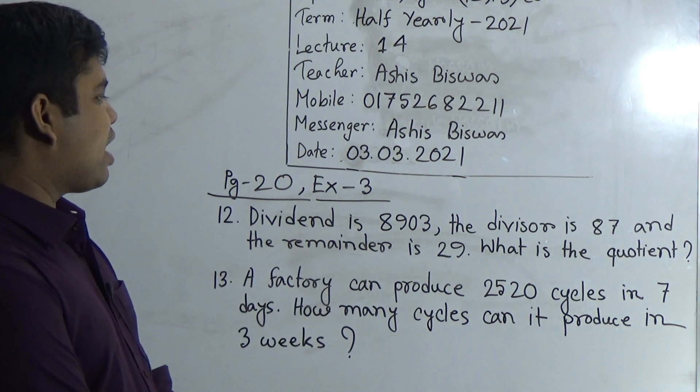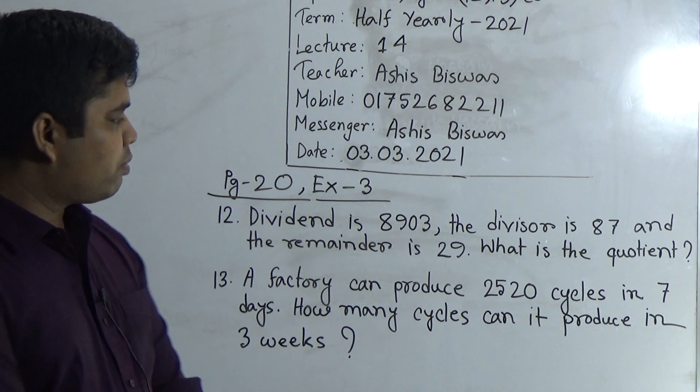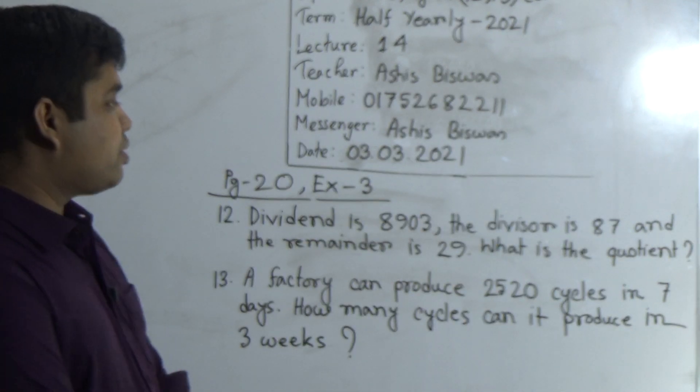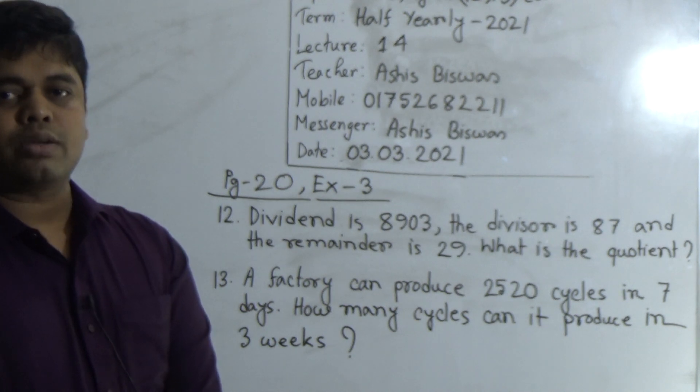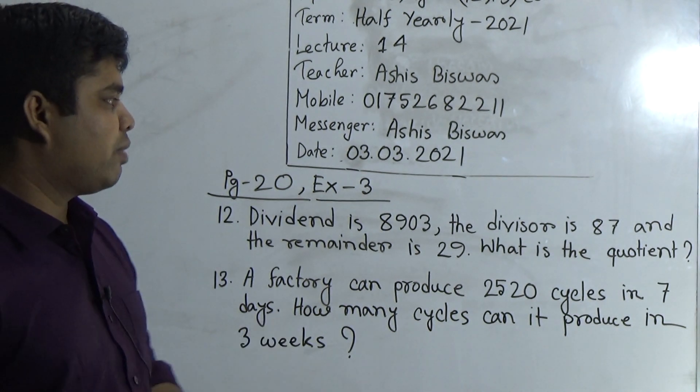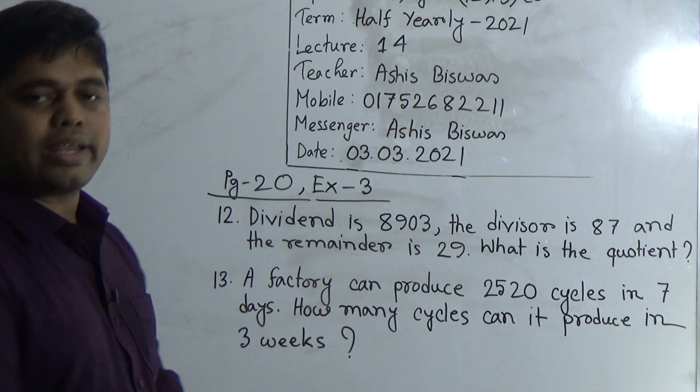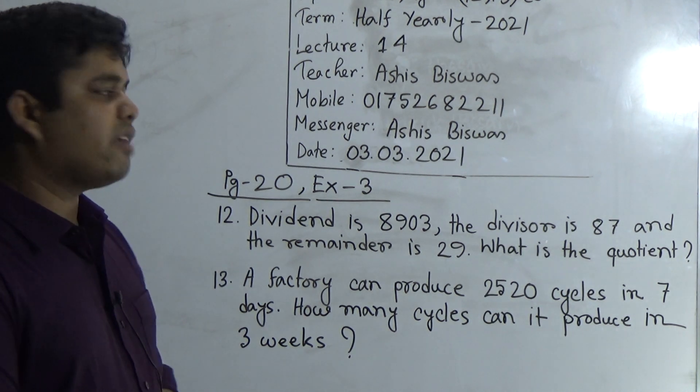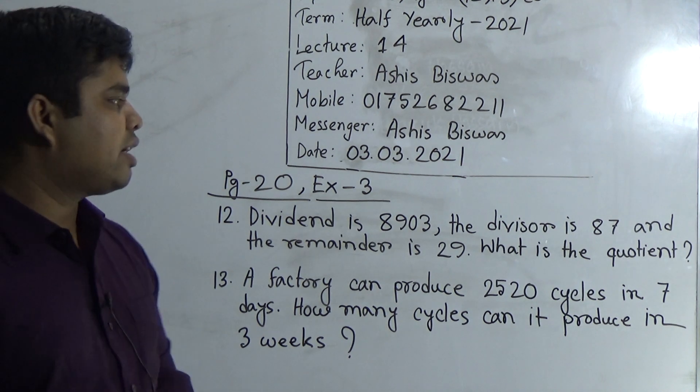My dear students, we have already learned the formula of dividend, divisor, quotient, and remainder. But today we need the formula of quotient. What is the formula of quotient? The formula of quotient is dividend minus remainder divided by divisor, and we get quotient.